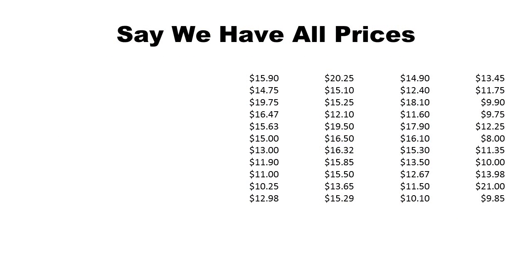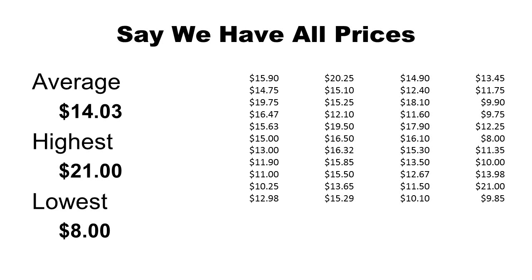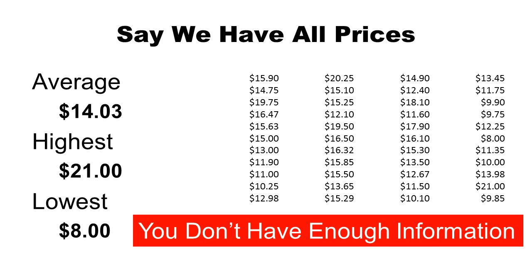How do we analyze the data on your behalf? Let's say we have all the specific prices on a job — here are 44 prices. These aren't bid prices, but they're like sticker prices: the list price of a specific item from 44 of your competitors. The average is $14.03, the highest is $21, and the lowest is $8. So what's your strategy — where do you put your list price to get the most business? The answer is you don't have enough information, because you're just looking at the extremes and not the meaningful ranges of prices.